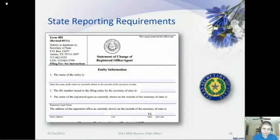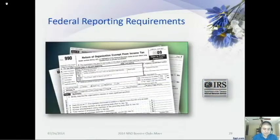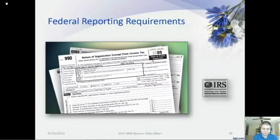Federal Reporting Requirements. It is a common misconception that 501c3 tax-exempt organizations are not required to file a federal income tax return because of their tax-exempt status. The truth is that the IRS needs to determine that the organization continues to qualify for 501c3 status by knowing what the organization's gross receipts are and whether that income is being used for the tax-exempt purpose. Non-profits report this information using Form 990, Return of Organization Exempt from Income Tax; Form 990EZ, Short Form Return of Organization Exempt from Income Tax; or Form 990N, also called the ePostcard, Annual Electronic Notice.